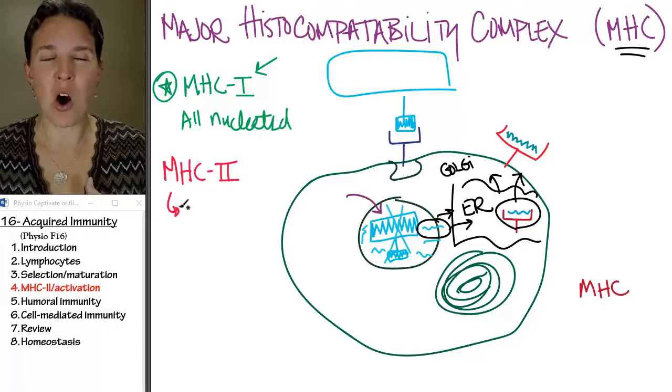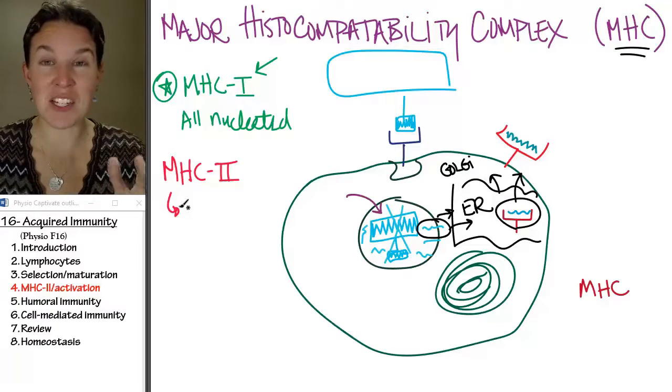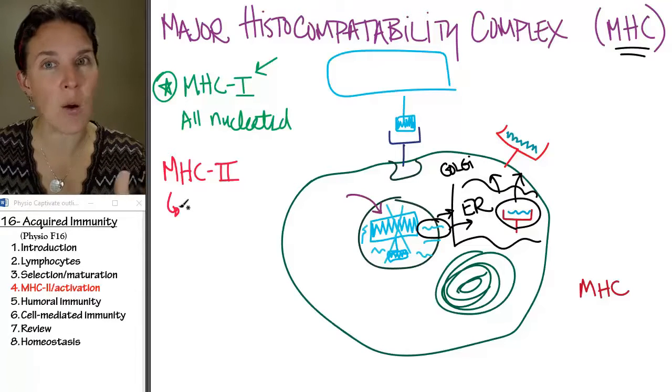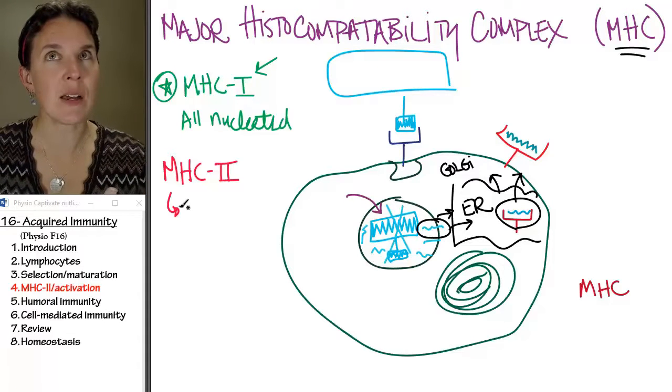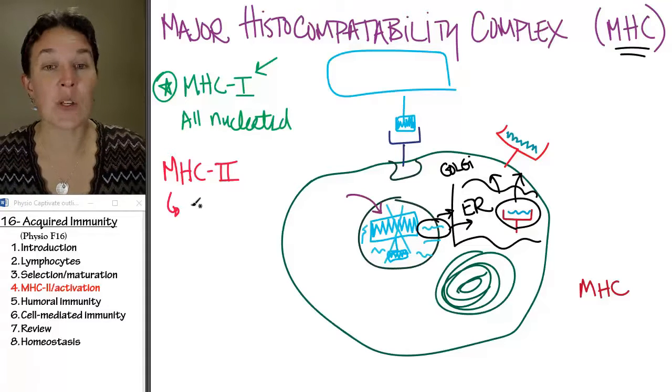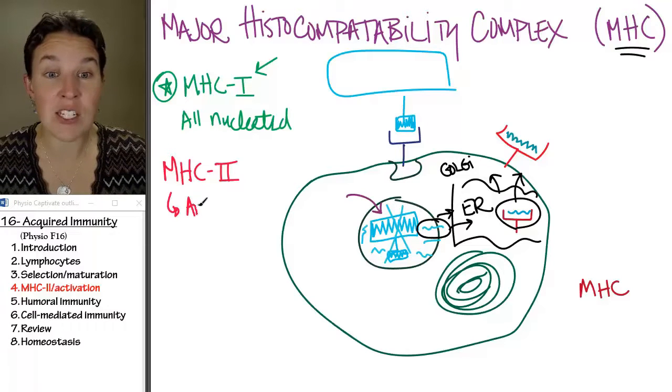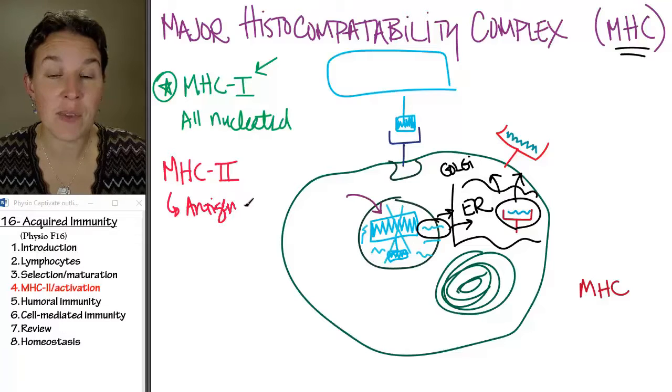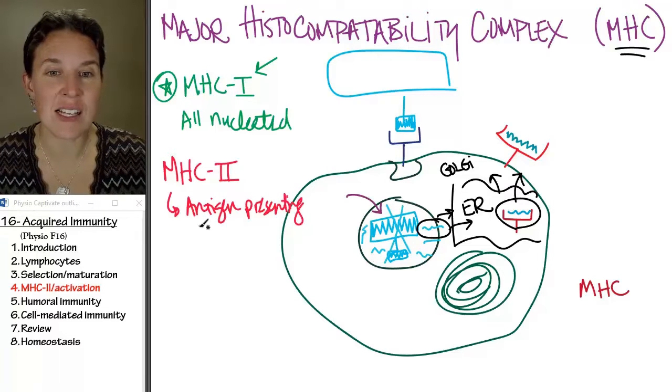So almost 100% of the time, MHC II is somehow involved in activating the acquired immune response. It's only found on antigen-presenting cells.